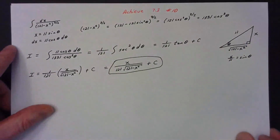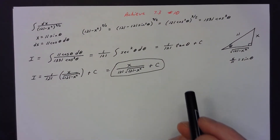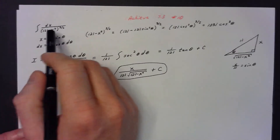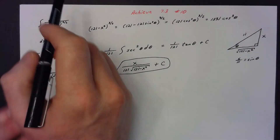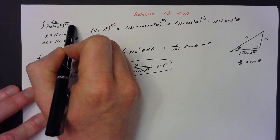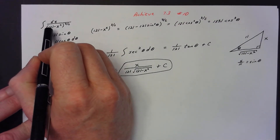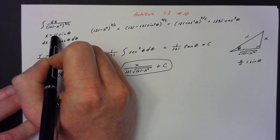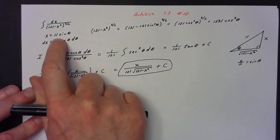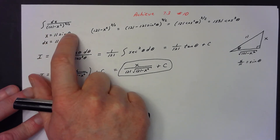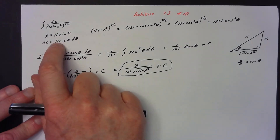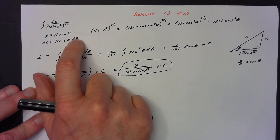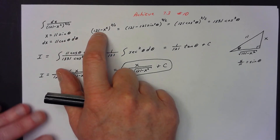Problem 10 is the shortest one of this bunch, and that's because once you get it set up, the integration process is super easy. You're going to have dx over (121 − x²)^(3/2). Anytime you see a² − x², let x equal a sin θ. Here a = √121 = 11, so x = 11 sin θ, and dx = 11 cos θ dθ.